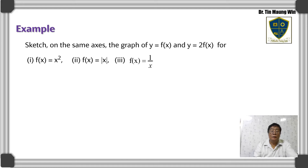f(x) equals x squared. f(x) equals mod x. f(x) equals 1 over x, where x ≠ 0. Vertical scaling factor 2 — net transform.